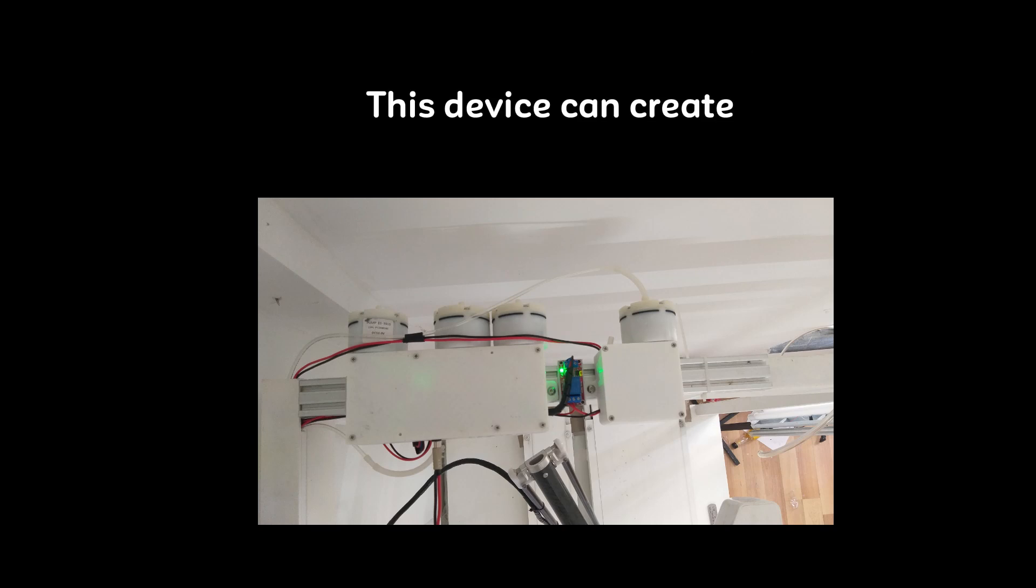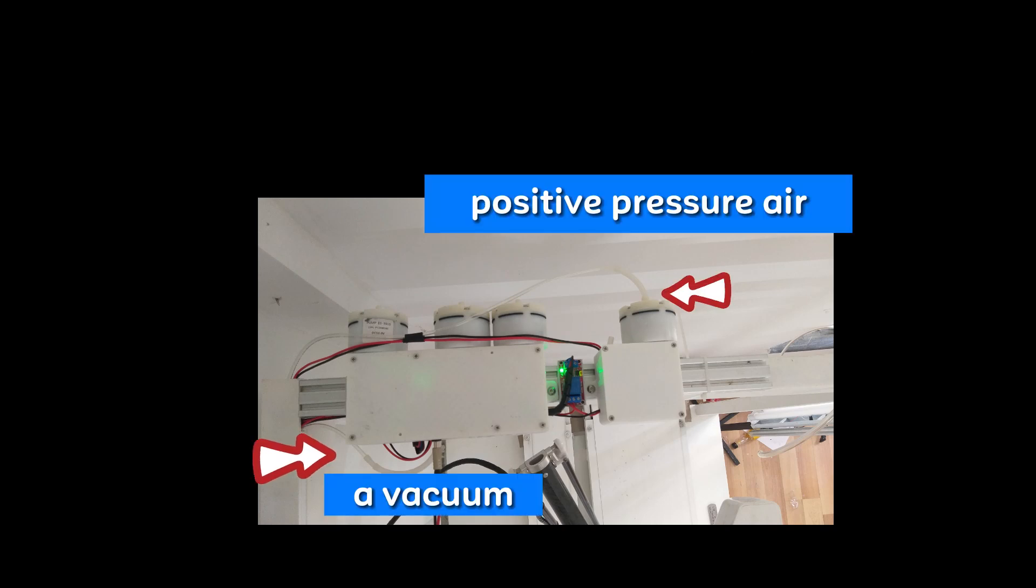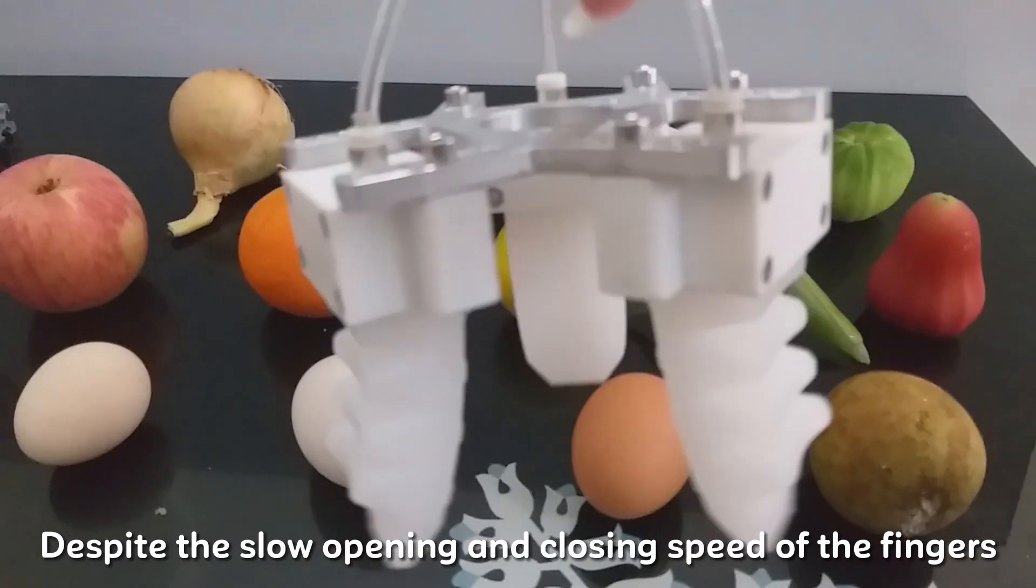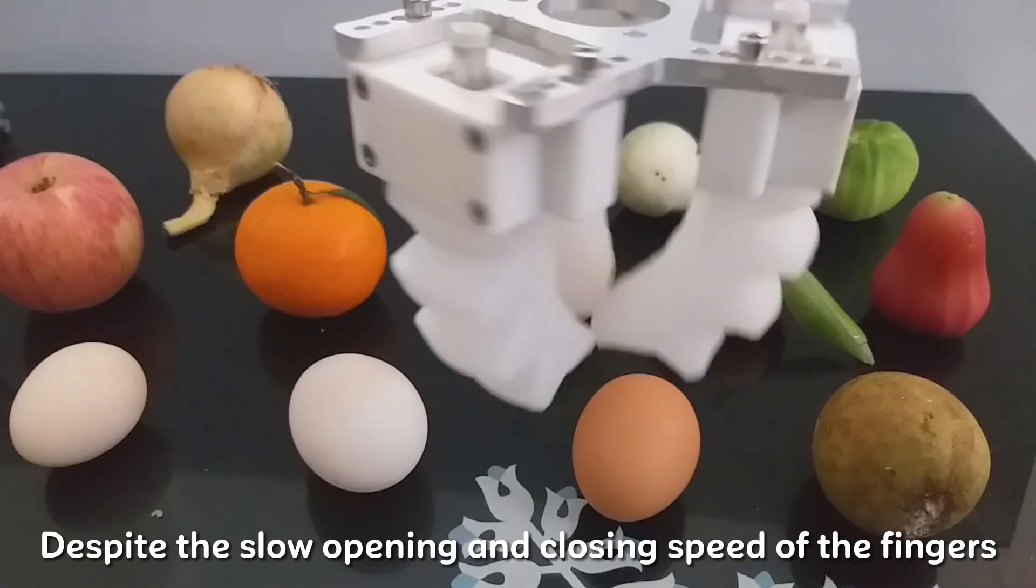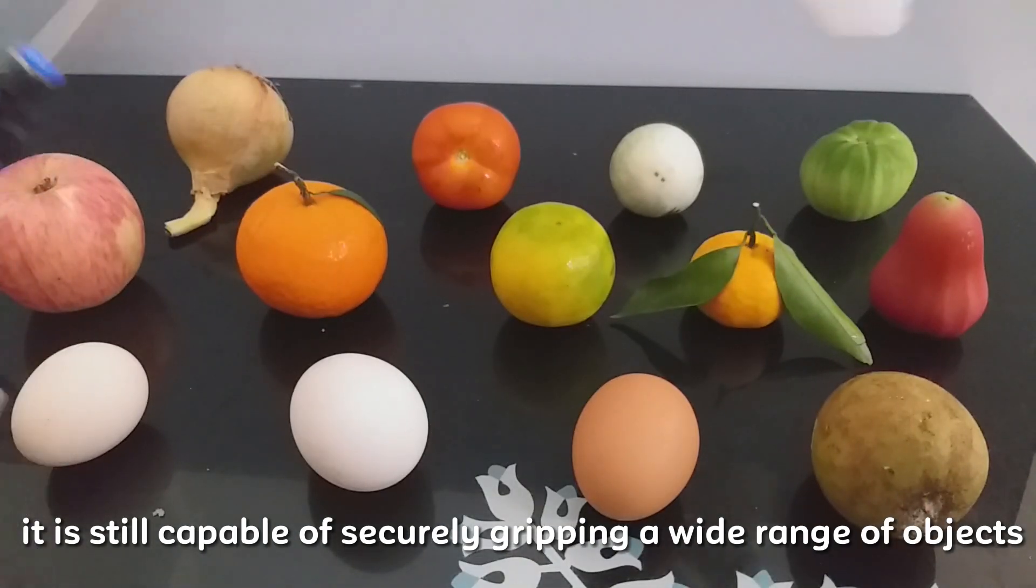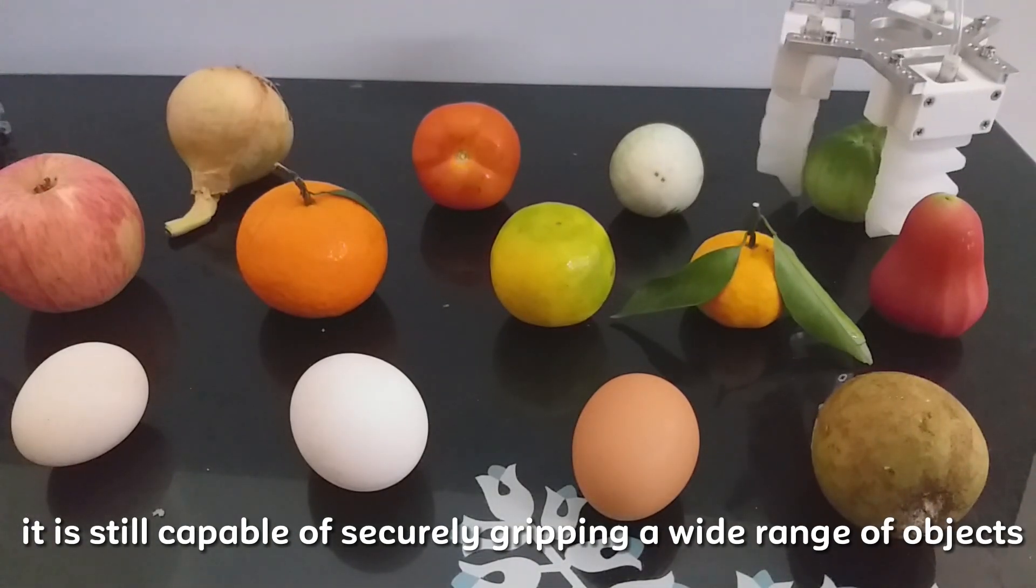This device can create a vacuum as well as generate positive pressure air. Despite the slow opening and closing speed of the fingers, it is still capable of securely gripping a wide range of objects.